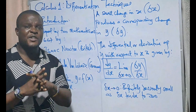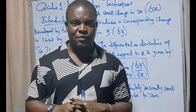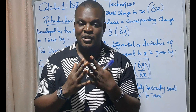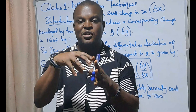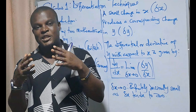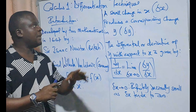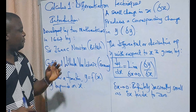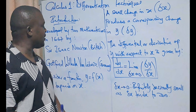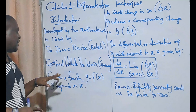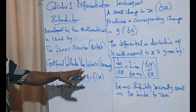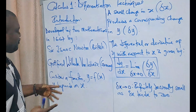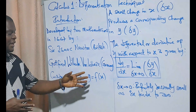Differentiation as a field of study is actually under mathematics and deals with the study of the rate of change in a function with respect to its variable. Differentiation as a field was actually introduced by two great mathematicians — Sir Isaac Newton and Gottfried Wilhelm von Leibniz — in 1667.